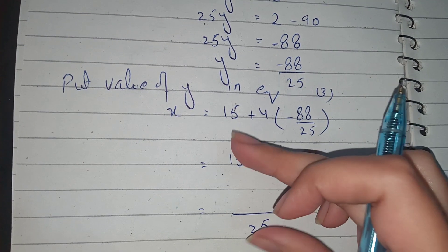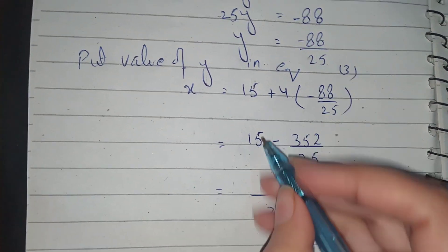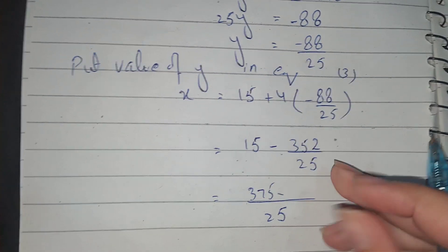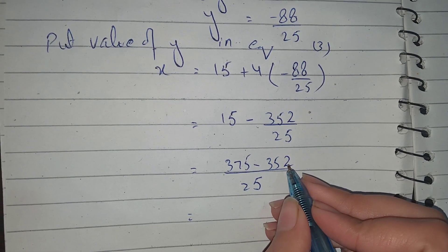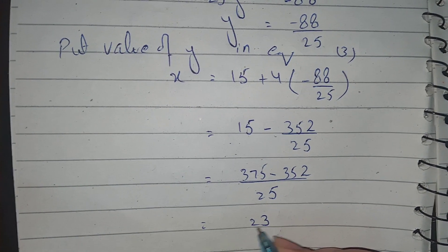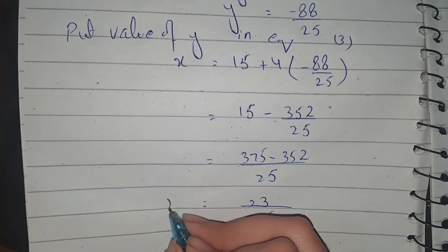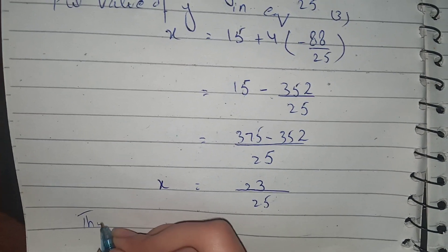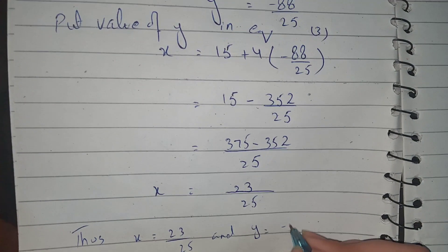This is simple. 25 times 15 equals 375. When the denominator is the same, 375 minus 352 gives us 23. So in the denominator we have 25. We find out x and y: x is equal to 23 by 25, and y is equal to minus 88 by 25.